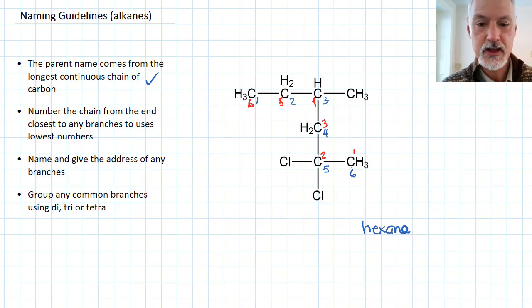If I look at the branches off the chain using the red numbers, I have a branch coming off here at carbon number 2 and another one here coming off at carbon number 4. That's a lower set of numbers than if I use the blue numbers. If I use the blue numbers, I have a branch at carbon number 3 and 2 at number 5. So it's lower if I use my red numbers.